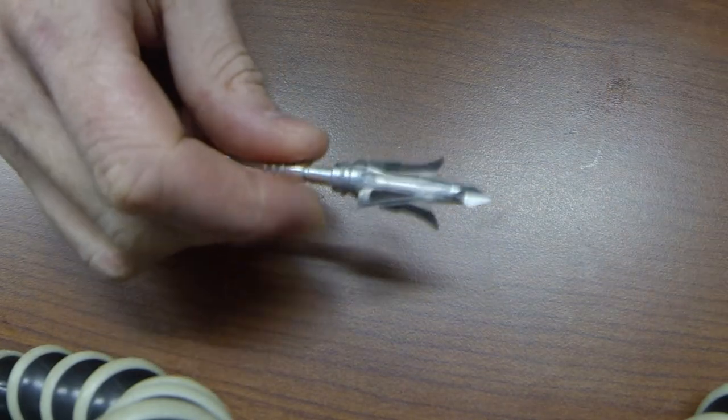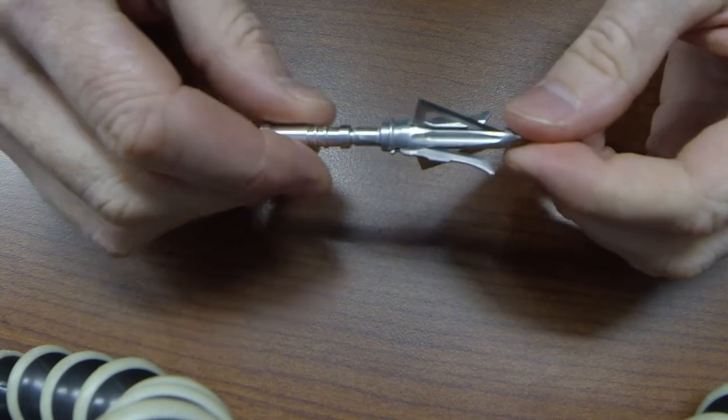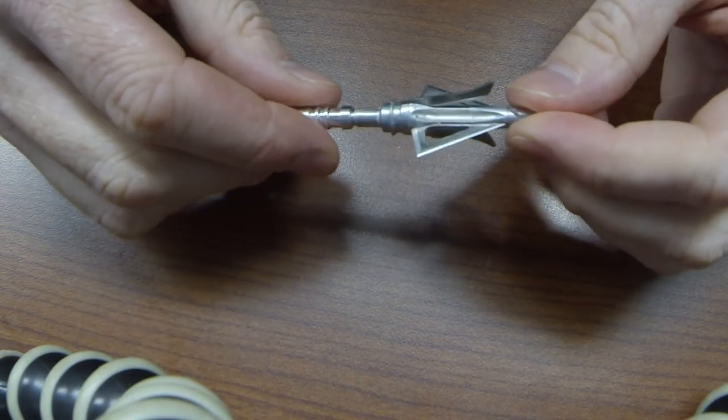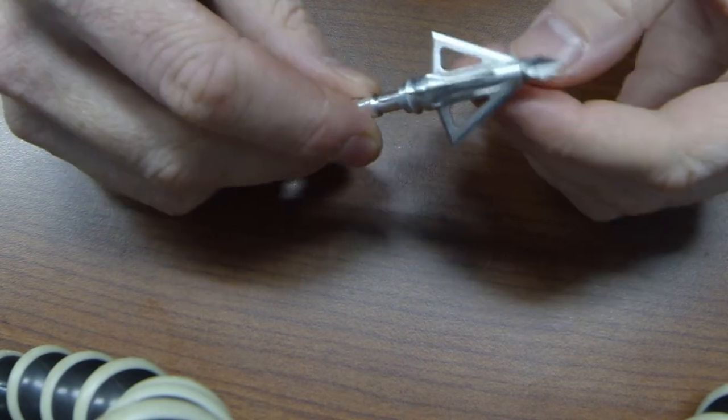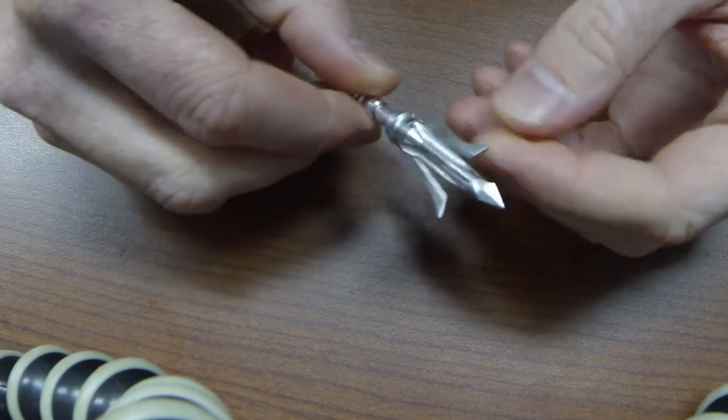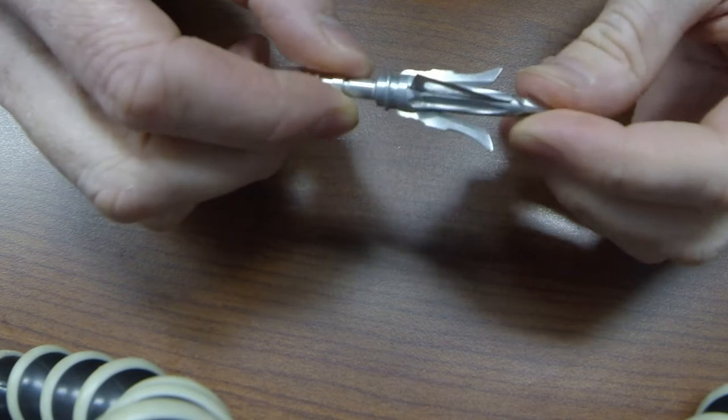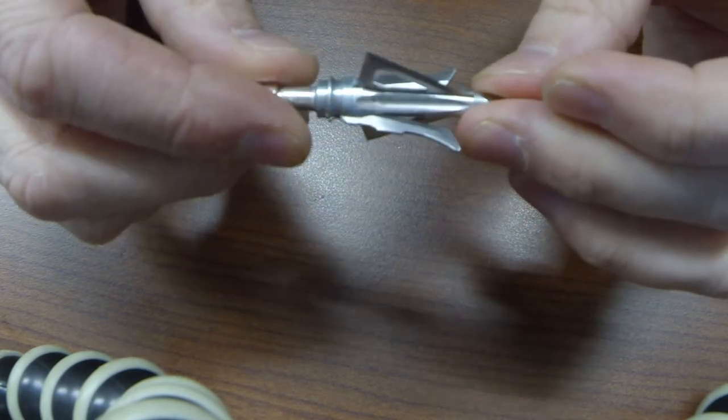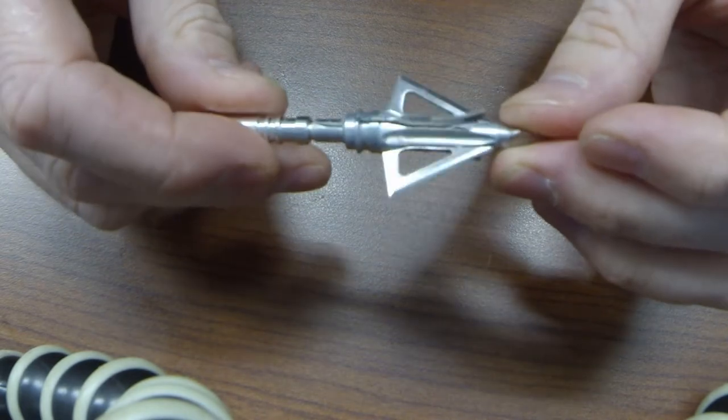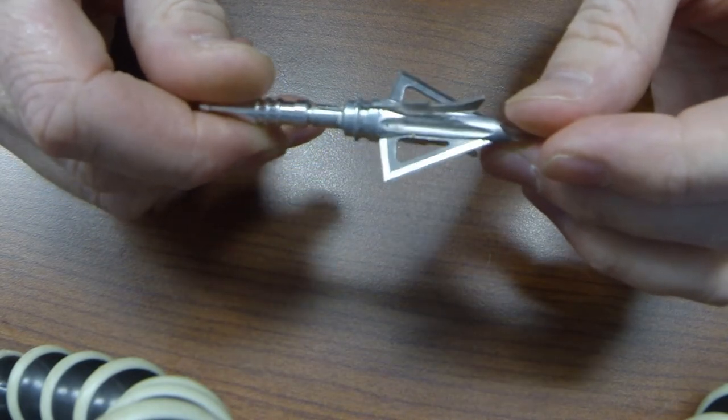Alright, this is basically just a rundown on the new Grim Reaper Hybrid Broadhead and how to disassemble it and try to straighten it out. You'll notice here that one of the blades, this one in particular, is kind of away from the ferrule a little bit. I've been using this broadhead as a practice broadhead to broadhead tune my bow.